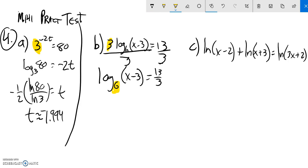Next thing I see, I have a base 6. So I'm going to rewrite this as 6 to that power. So 6 to the power of the answer, 13 thirds, is equal to x minus 3. Next thing I'm just going to add 3 to both sides, add 3 to both sides, get x all alone. So 6 to the 13 thirds plus 3 is equal to x.